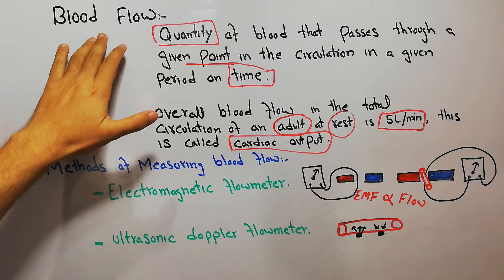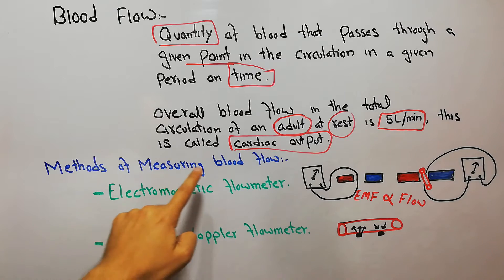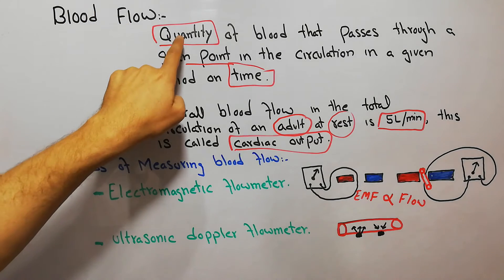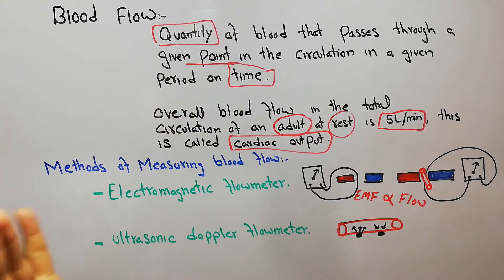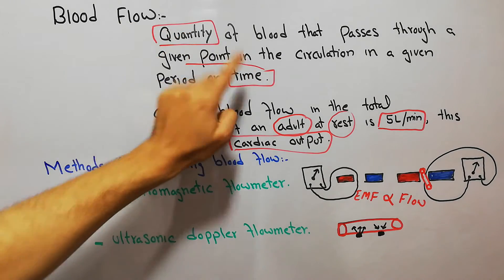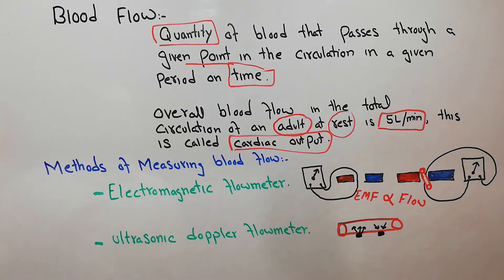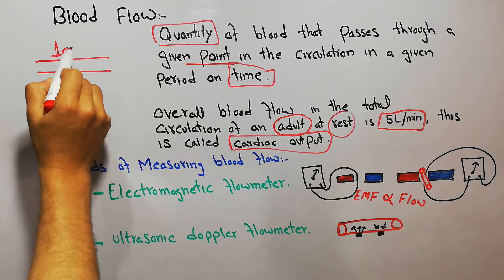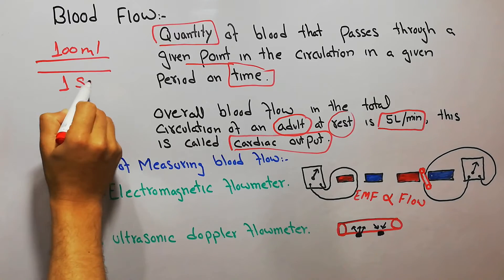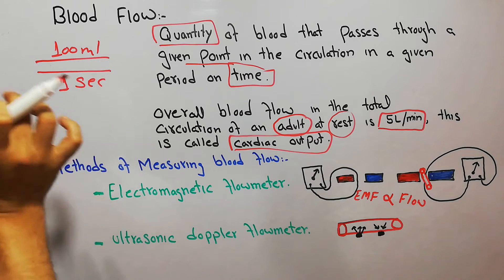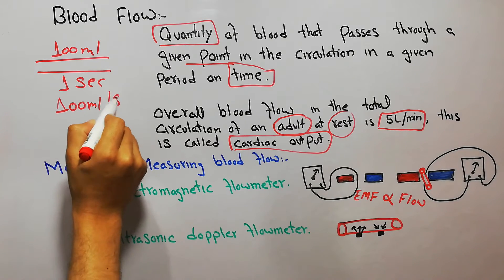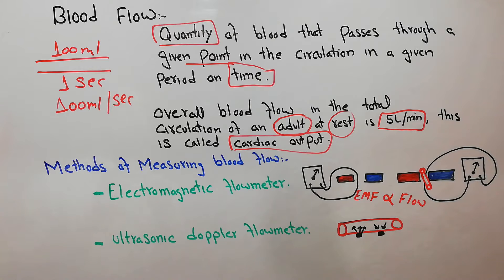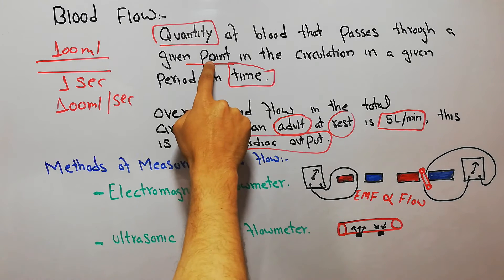In this lecture we are going to discuss blood flow and methods of measuring blood flow. Blood flow is simply the quantity of blood that passes through a given point in the circulation in a given period of time. For example, if this is a blood vessel and 100 ml of blood passes in one second, the blood flow at this specific point will be 100 ml per second.